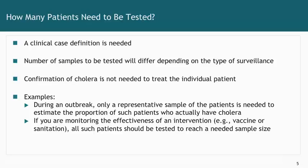The number of samples to be tested will differ depending on the type of surveillance. If you're experiencing a new outbreak, you'll want to document it by testing a good number of samples, perhaps 10 to 20, to confirm it is truly a new outbreak. After the outbreak is underway, it's more a matter of confirming a representative sample of specimens to know what proportion of such patients actually have cholera. However, if you're monitoring the effectiveness of an intervention such as a vaccine or water sanitation intervention, you may need to test a much larger sample or perhaps all of the patients.